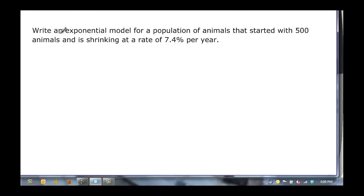Finally, let's go the other way. Write an exponential function for a population of animals that started with 500 and is shrinking at a rate of 7.4%. We want it to be a shrinking rate, which means we're going to take 100% and subtract 7.4%.